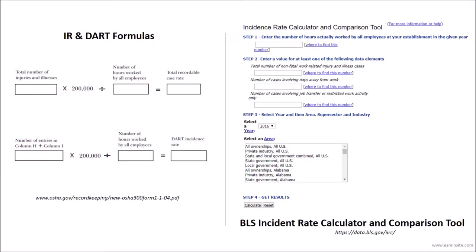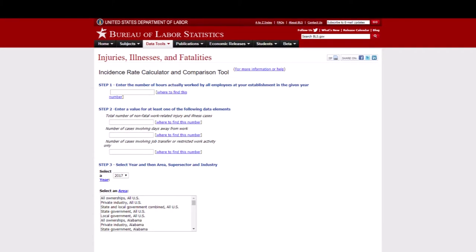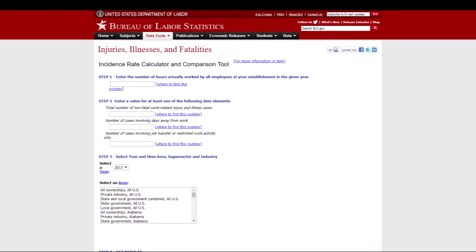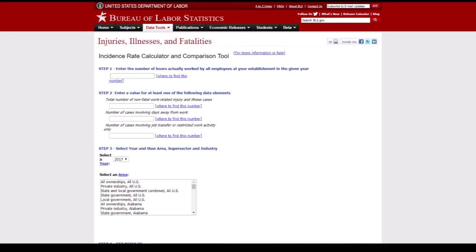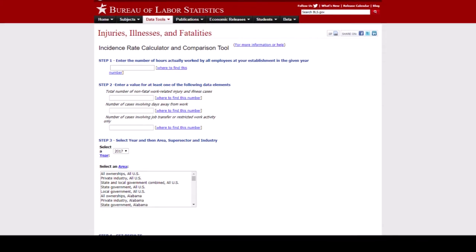In this training, we are not going to go in-depth with how to calculate incident rates and DART rates, but we wanted to share some formulas which were taken off the OSHA 300 instruction guide listed on the bottom left side of the slide. Additionally, if you are calculating your incident rates and want to compare your rate to your industry's national average rate, you can visit the Bureau of Labor Statistics at the link on the right of the slide. The BLS provides industry-specific incident rate data, which you can use to set goals and benchmark your results against national averages.